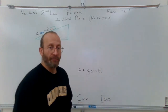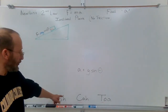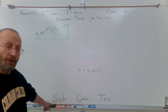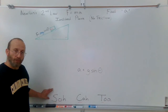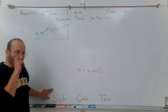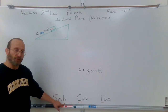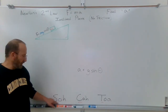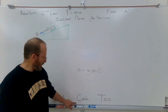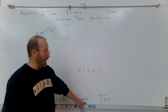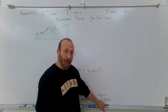I have the three main trig functions, or at least the mnemonic — the memory device we use to calculate them — SOH CAH TOA. SOH is the memory trick for sine: the opposite over the hypotenuse. CAH is for cosine: the adjacent over the hypotenuse. And TOA: tangent is the opposite over the adjacent.